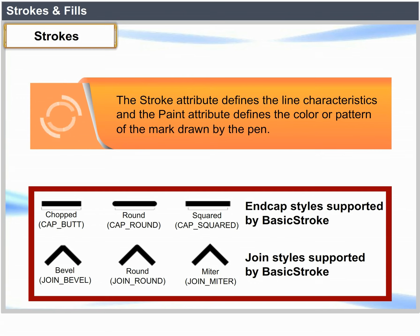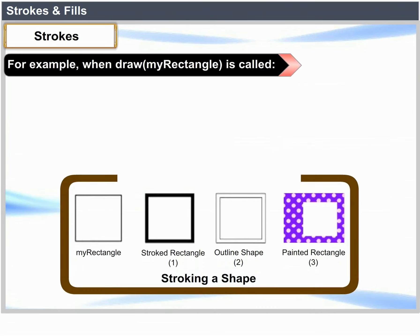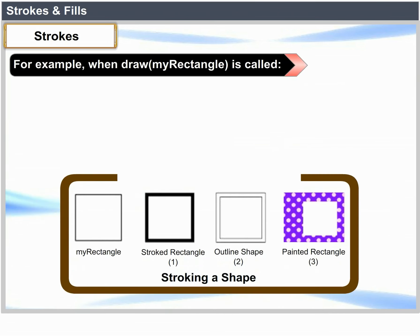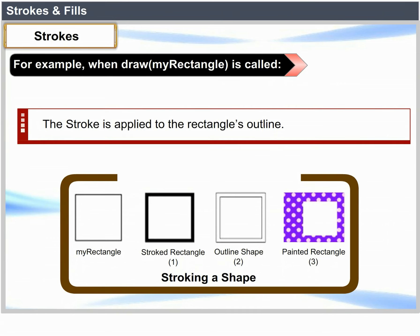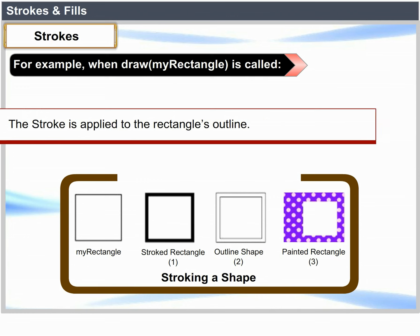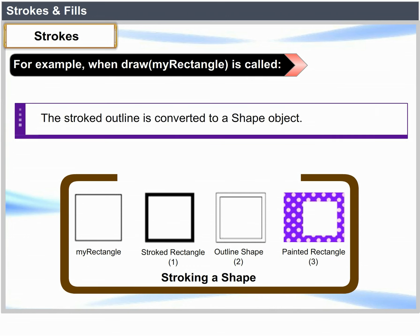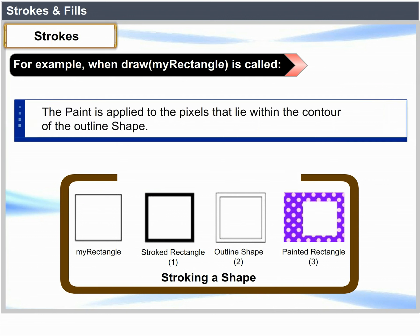The stroke attribute defines the line characteristics and the paint attribute defines the color or pattern of the mark drawn by the pen. For example, when drawRectangle is called, the stroke is applied to the rectangle's outline. The stroke outline is converted to a shape object. The paint is applied to the pixels that lie within the contour of the outline shape.